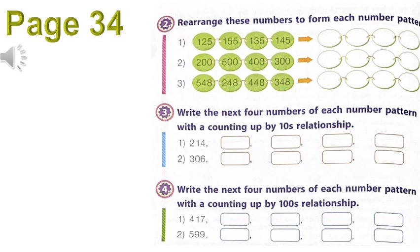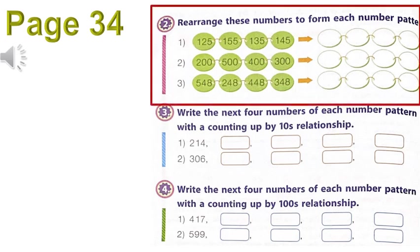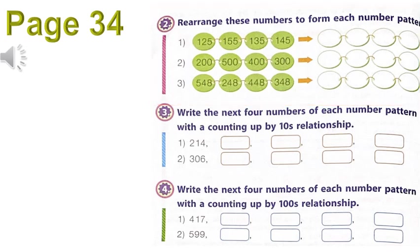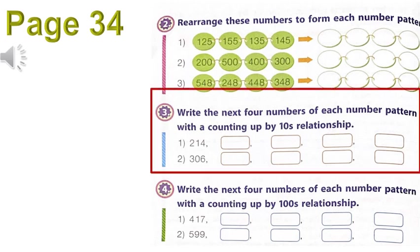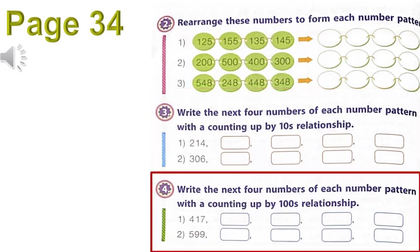Page 34, number two: rearrange these numbers to form each number pattern — numbers one, two, and three are all in ascending order, from smallest to biggest. Number three: write the next four numbers of each number pattern with a counting up by tens relationship — again, counting up. Number four: write the next four numbers of each number pattern with a counting up by hundreds relationship — again, counting up by hundreds.